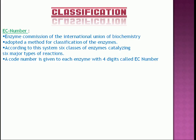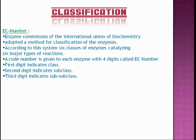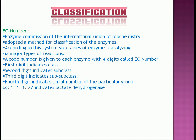A code number is given to each enzyme with four digits called EC number. First digit indicates class. Second digit indicates subclass. Third digit indicates sub-subclass. Fourth digit indicates serial number of the particular group of enzymes.